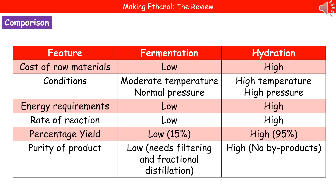The rate of reaction is low in fermentation, so it takes quite some time to make enough ethanol, whereas in hydration it's a very high rate of reaction, generating more product in a shorter time. Percentage yield is low in fermentation but high in hydration. The purity of the product in fermentation is also low because we need to filter it and carry out fractional distillation to isolate our ethanol, whereas in hydration there are no byproducts, giving a high purity product.